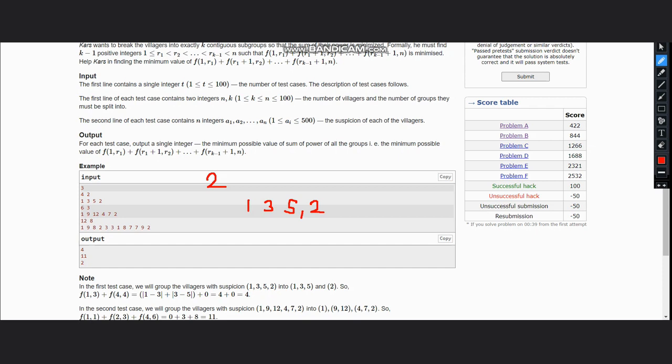When we find the absolute difference, it will be mod of 1 minus 3, which is 2, plus mod of 5 minus 3, which is also 2. For the second group, we have only one element, and as mentioned above, it has power of 0 because 2 minus 2 would be 0. Hence the power becomes 4, so the minimum value is 4 here.